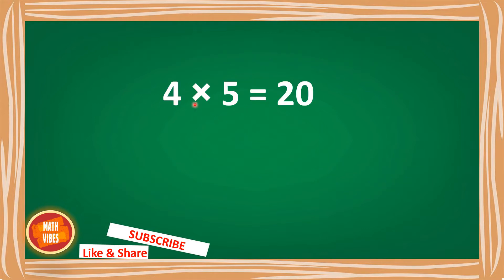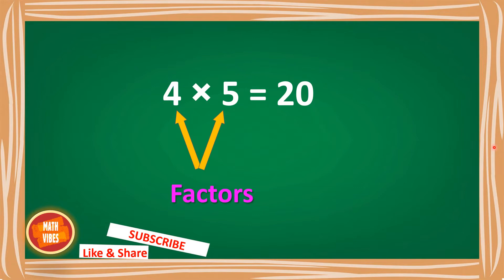So that means if I write 4 × 5 = 20, then 4 and 5 will be called factors and the number 20 will be called the multiple. These two numbers which are being multiplied are called factors, and the product of these two numbers is called the multiple.